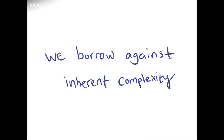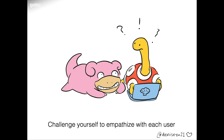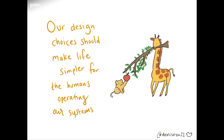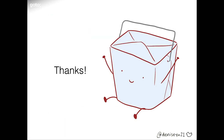So when we build out these systems, we're always borrowing against inherent complexity. Humans can learn and adapt, but we need a little bit of help. We should be constantly challenging ourselves to empathize with every human who interfaces with our systems — every decision we make that affects the user is a design decision. We should always design for the humans who ultimately have to operate and build these systems — even design with empathy towards your future self — and choose tools and processes that promote learning and sustainable pace. We owe it to our end users and to our future selves to understand and design for the whole system, including the fleshy human parts. Thank you.